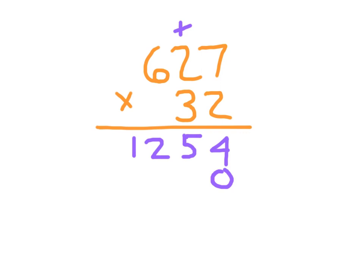3 times 7 is 21 — place the 1 and regroup the 2. Then 3 times 2 which is 6, plus 2 which is 8. And then finally 3 times 6 which is 18.